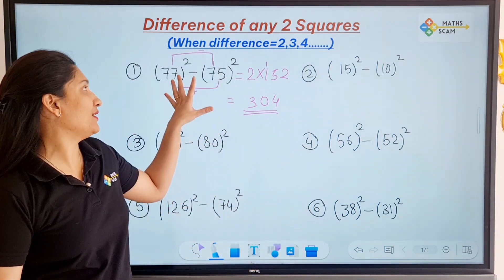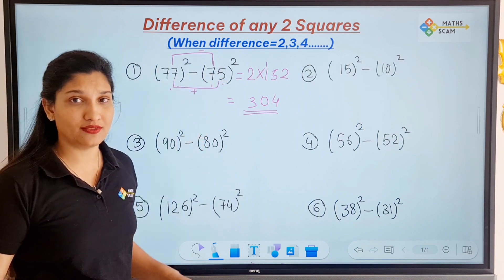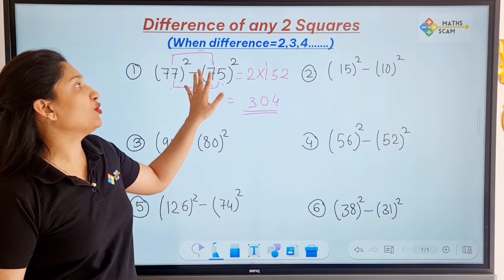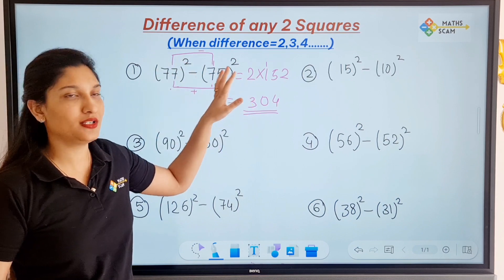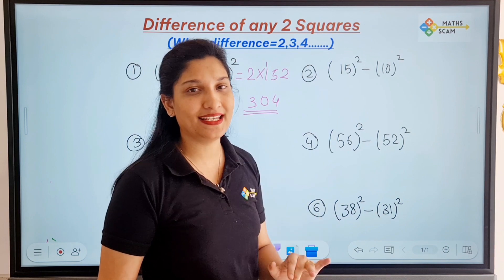So that is our answer. Without actually finding the square of 77, square of 75, and their difference, what we did is we just add both the numbers, we just subtract both the numbers, and we did multiplication. That's it. Very, very, very easy.